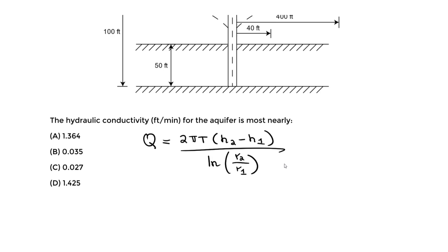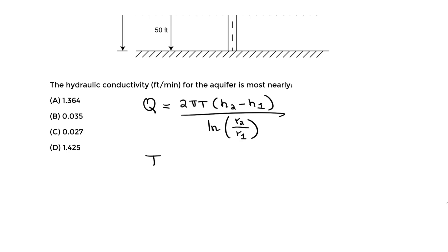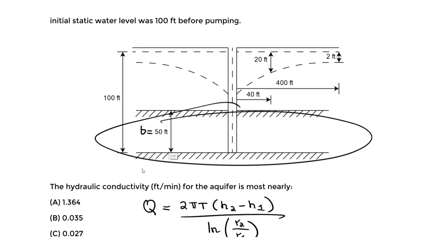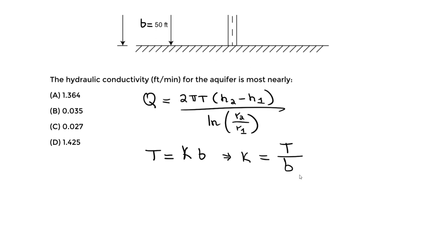Hydraulic conductivity is related to transmissivity. The transmissivity T equals K times B, where K is the hydraulic conductivity. We want to find K, so rearranging: K equals T divided by B. B, as defined in the handbook, is the thickness of the confined aquifer — in this case, 50 feet. We'll find T using the main equation, then plug in B to find K.